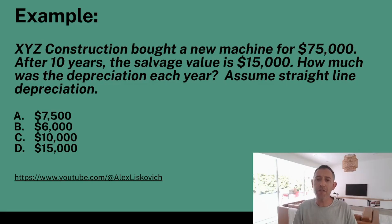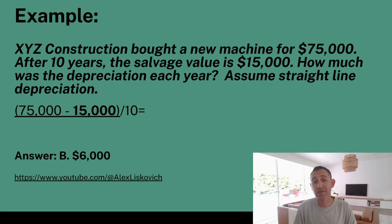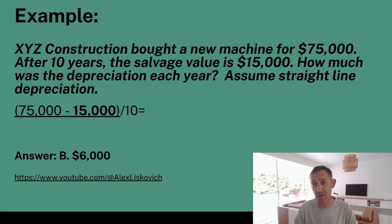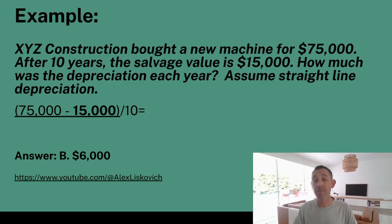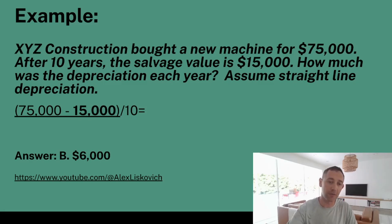XYZ Construction bought a new machine for $75,000. After 10 years, the salvage value is $15,000. How much was the depreciation each year? Assume straight-line depreciation. The answer is B — $6,000. So the calculation: $75,000 minus $15,000 salvage value equals $60,000, divided by a 10-year life, which equals $6,000 per year. Slightly different from the previous questions because we now have a salvage value, but the formula stays exactly the same, as it always will.